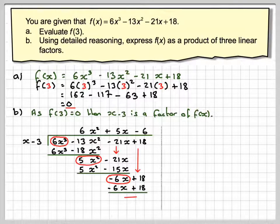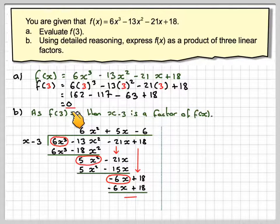And when you do the subtraction now, you get no remainder, which is what we expected, because we've got f of 3 is equal to 0.